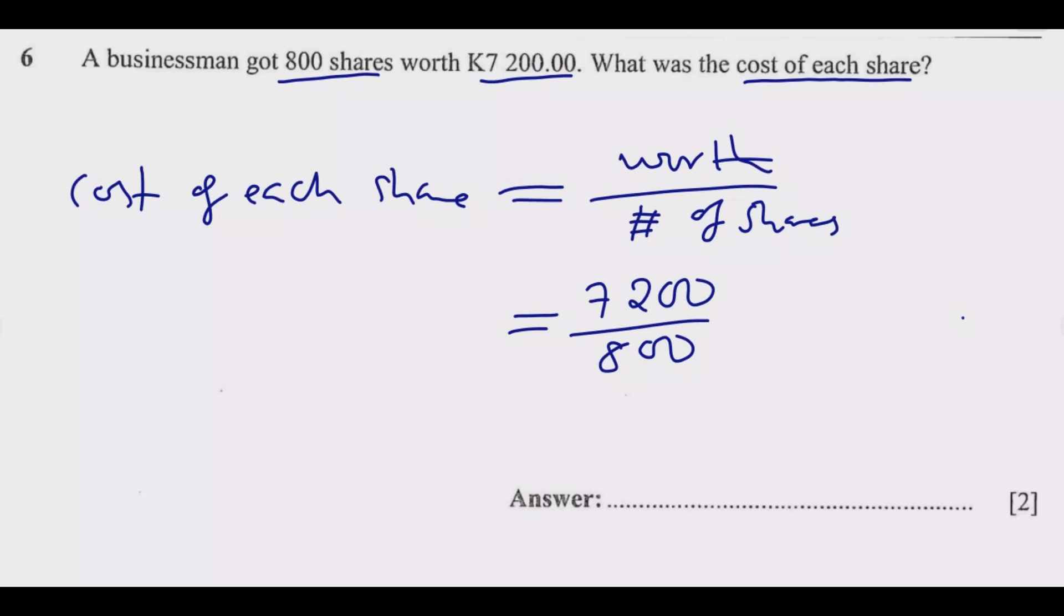You're not allowed to use a calculator, so you can cancel the zeros. Eight into 72 gives us nine, so the cost is K9.